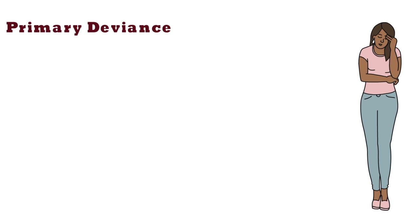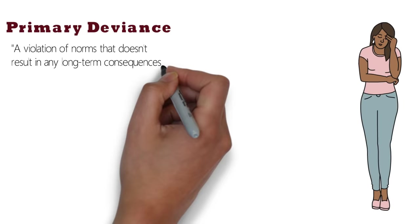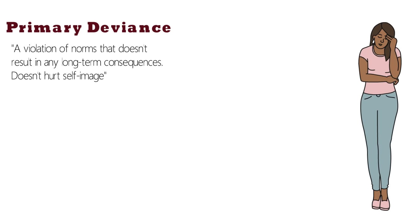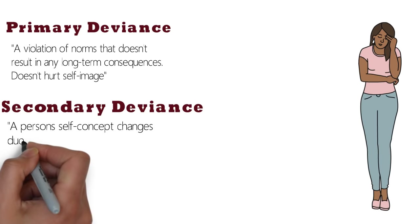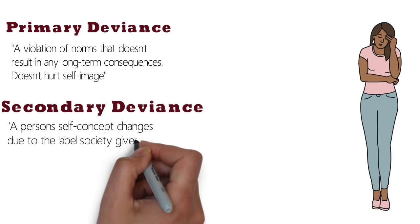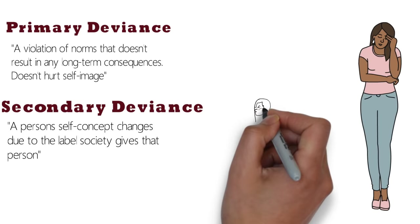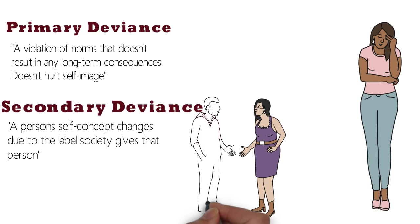There is also something we call primary and secondary deviance. Primary deviance is a violation of norms that does not result in any long-term consequences and does not hurt a person's self-image. If Sarah lives in Iowa and buys marijuana illegally one time without getting caught, she doesn't experience any long-term consequences and her self-image is intact. If she continues to do it and is arrested, or even if society knows she continues to buy it but she's never caught, she very likely will receive a label as deviant. This is secondary deviance. This happens when a person's self-concept changes due to the label society gives that person. One deviant act may not change the way society reacts or the way a person sees themselves.